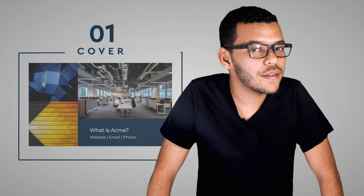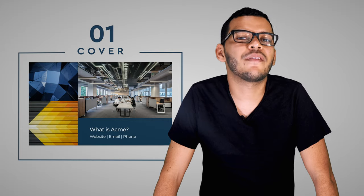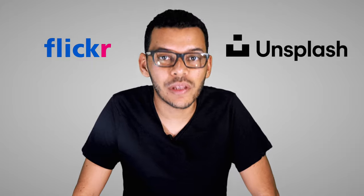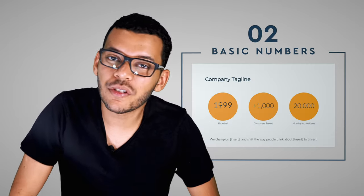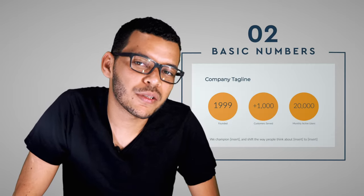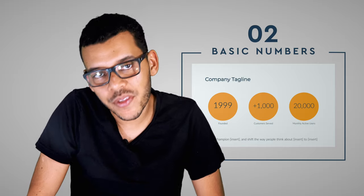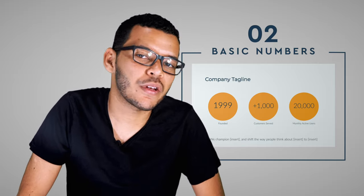These are the slides you need to include in your company profile template. 1. The cover — keep it simple. Choose the best company image you can find, and if you don't have one, try using Flickr and Unsplash integrations to find one that relates to your business. 2. Basic numbers. We used founding year, customers served, and monthly active users as examples, but the idea is to find some metrics, accomplishments, or awards that you can brag about.